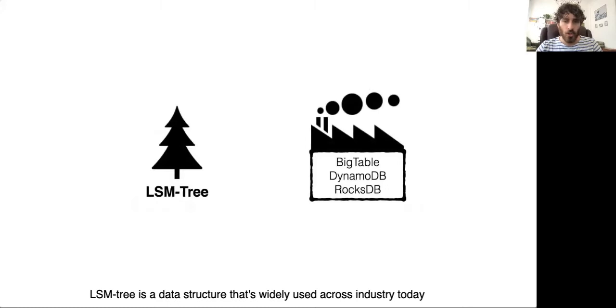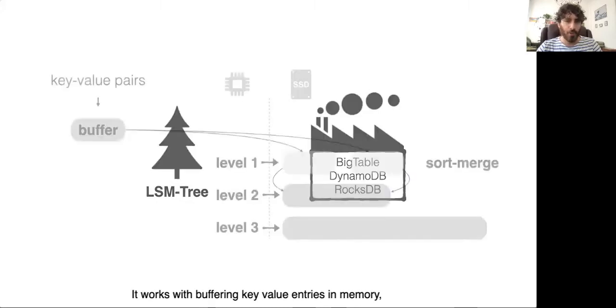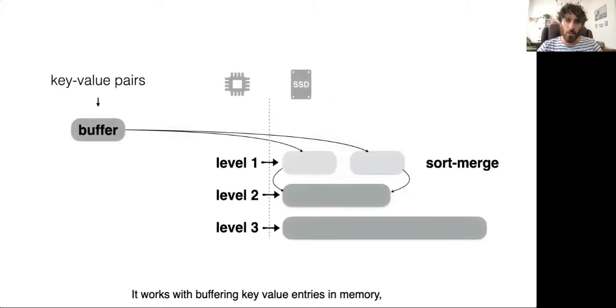LSM-Tree is a data structure that's widely used across the industry today in many storage engines and key-value stores. It works by buffering key-value entries in memory, flushing them to storage as sorted runs when it fills up, and sort-merging these runs across levels of exponentially increasing capacities.